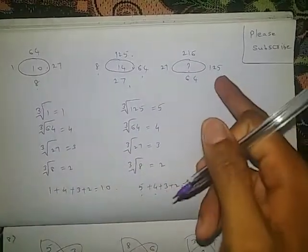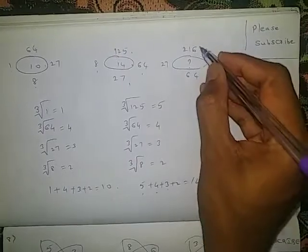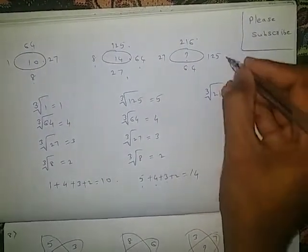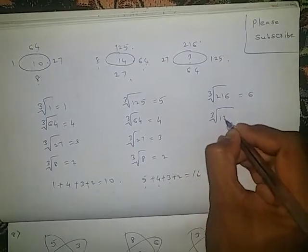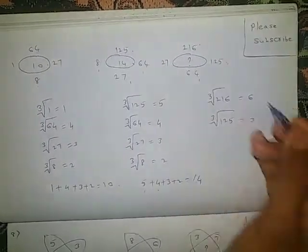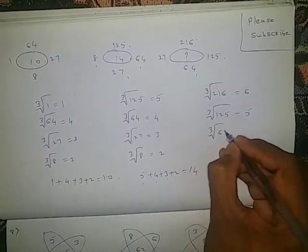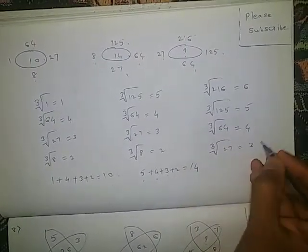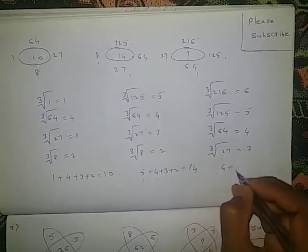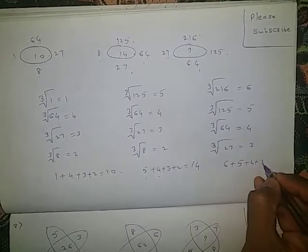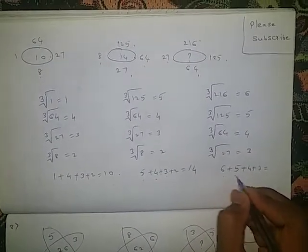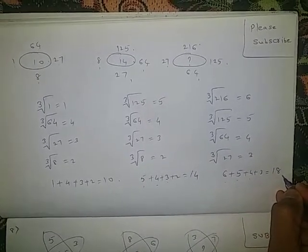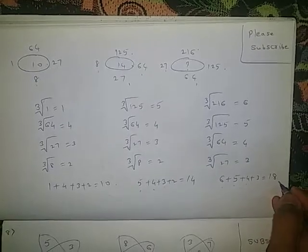Same logic for this one also. Cube root of 216 is 6. Cube root of 125 is 5. Cube root of 64 is 4. Cube root of 27 is 3. Now add all: 6 plus 5 plus 4 plus 3 — 6 plus 5 is 11, plus 4 is 15, plus 3 is 18. So the missing number is 18.